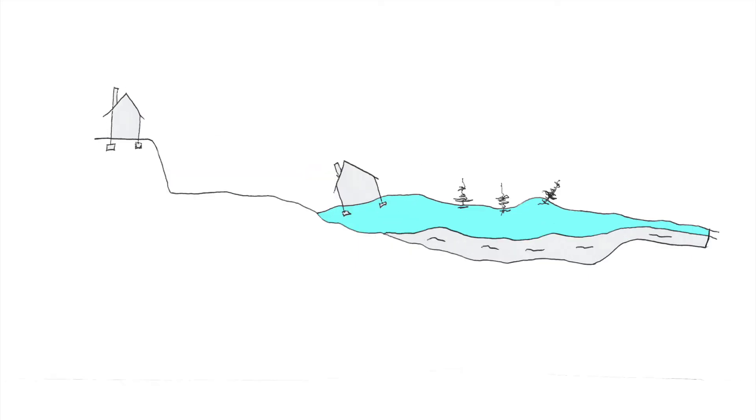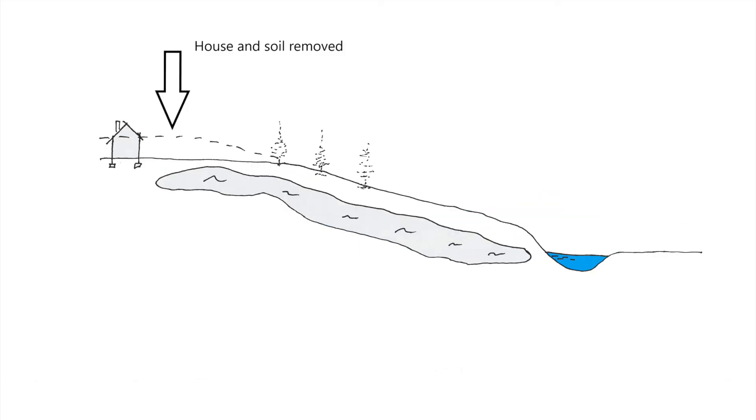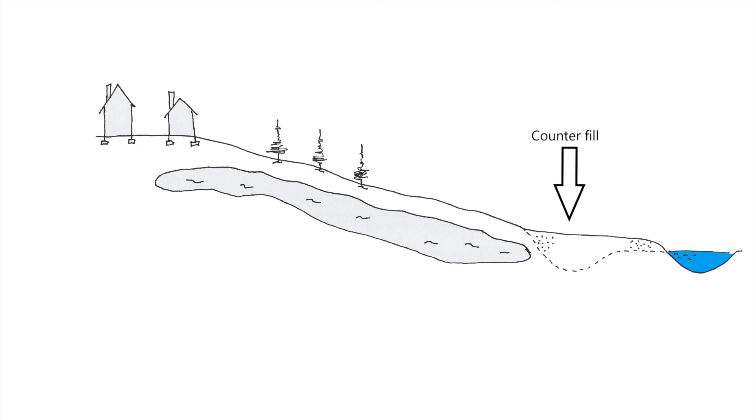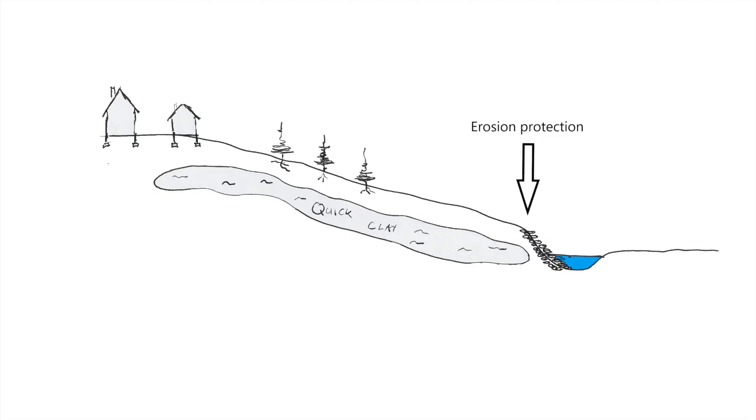The risk of a quick clay disaster can be reduced if weight is reduced to lower driving forces. Another option is to add a counterfill on the bottom of the slope to add a stabilizing load. Lastly, rivers should be protected from erosion.